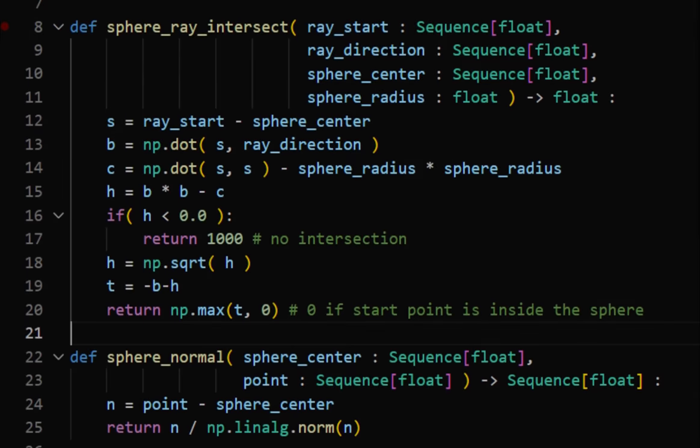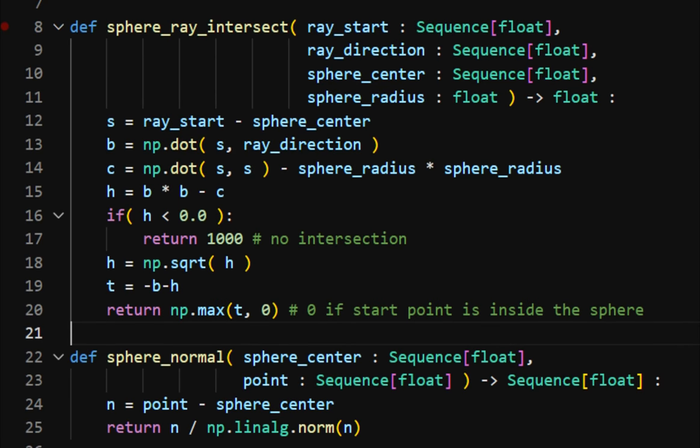Here's the source code used on this animation both to calculate the intersection and the surface normal. Note that the first function returns the distance T.